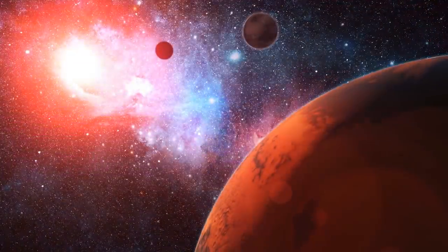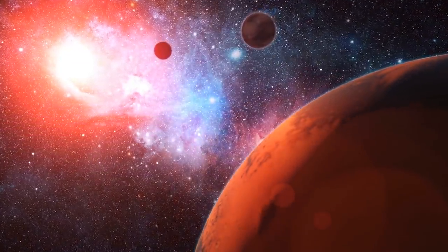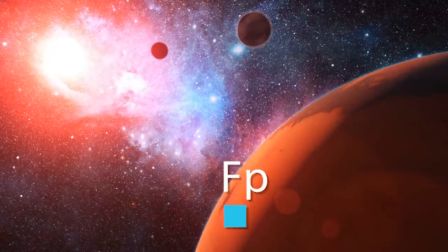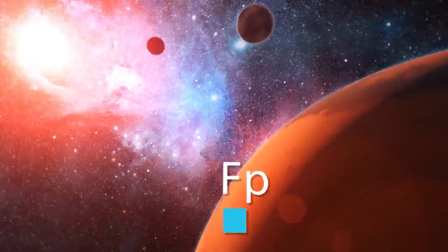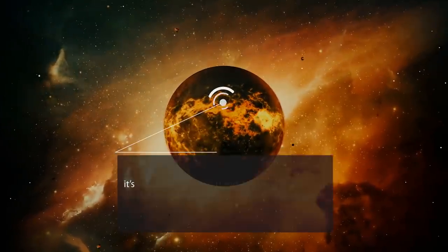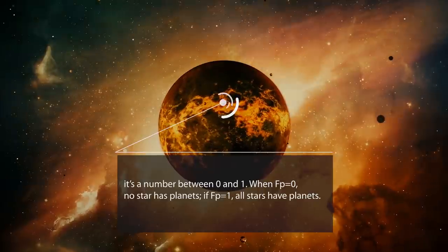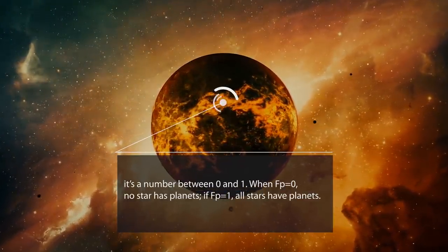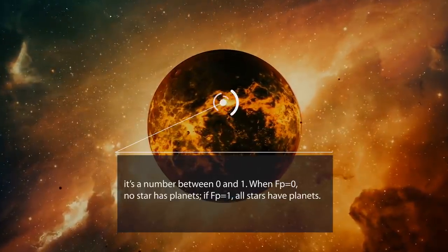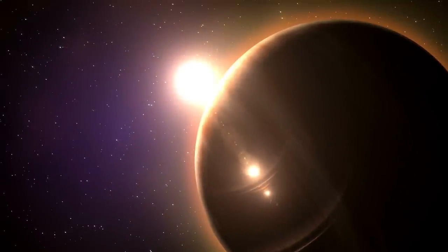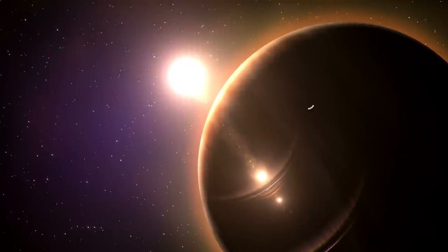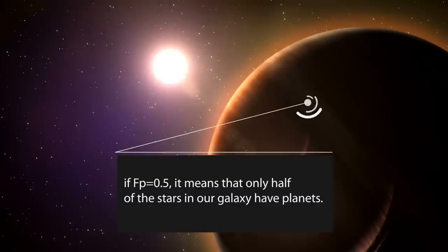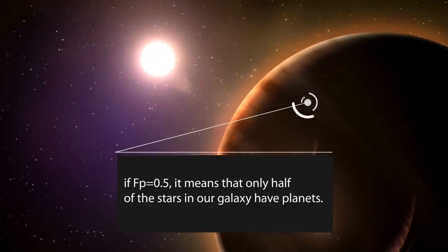Indeed. In fact, this is exactly what the second parameter of the equation, Fp, takes into account. Fp is the fraction of stars that have planets orbiting them. This is very simple. It's a number between 0 and 1. When Fp equals 0, no star has planets. If Fp equals 1, all stars have planets. Of course, the real value of this parameter will be something in the middle. For instance, if Fp equals 0.5, it means that only half of the stars in our galaxy have planets. Easy, right?